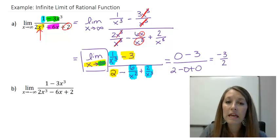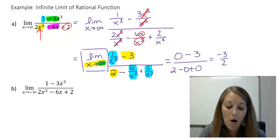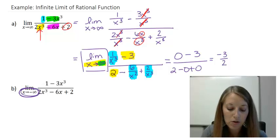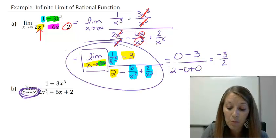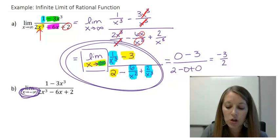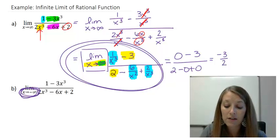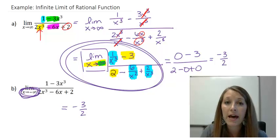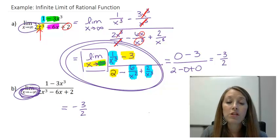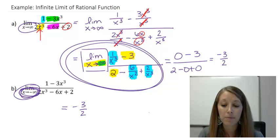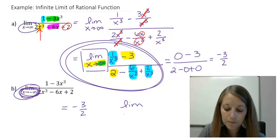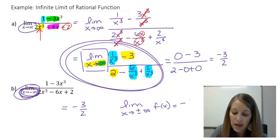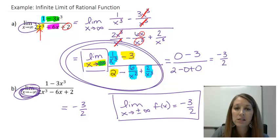This is the official way of finding infinite limits of rational functions. I can do the exact same thing for x approaching negative infinity, but I don't need to, because the exact same work is going to happen. All the terms with x in the denominator are going to cancel out no matter whether I plug in positive or negative infinity, and I'll be left with negative three halves. So both limits — as x approaches positive and negative infinity — are negative three halves, because the function approaches that horizontal asymptote on both the right and left-hand sides of the graph.